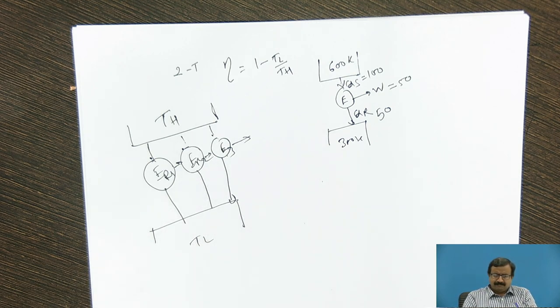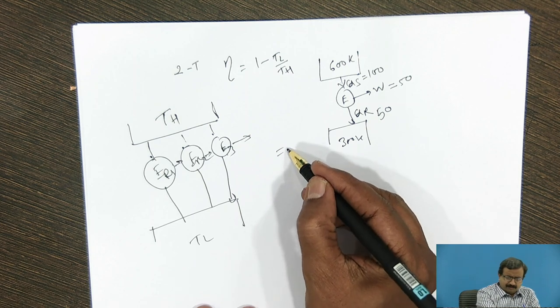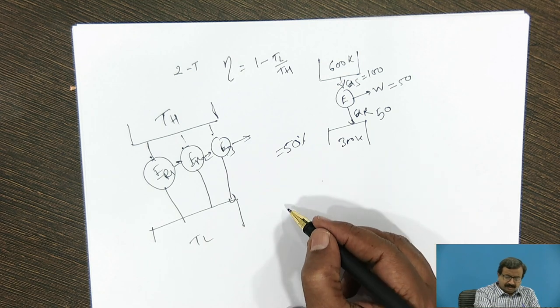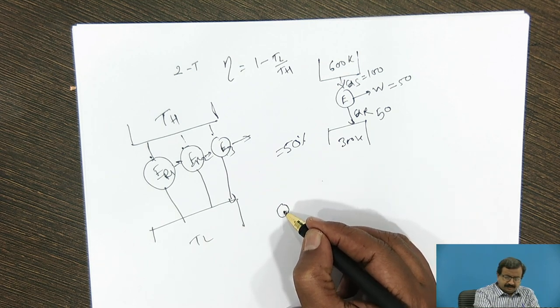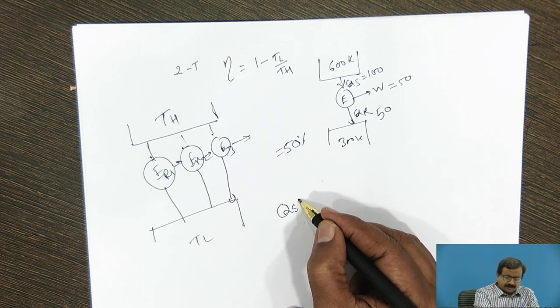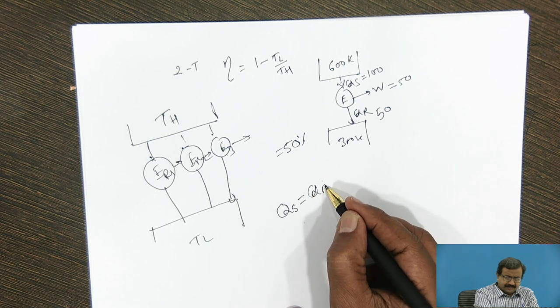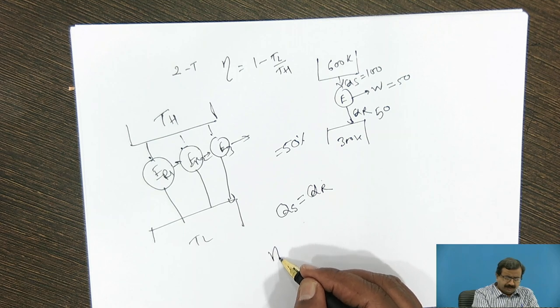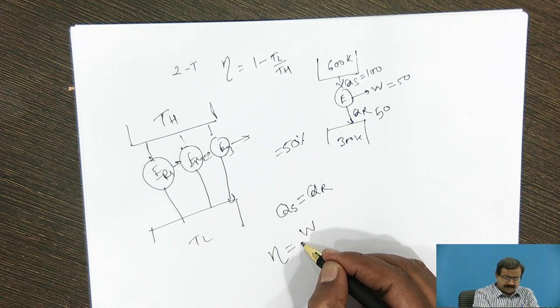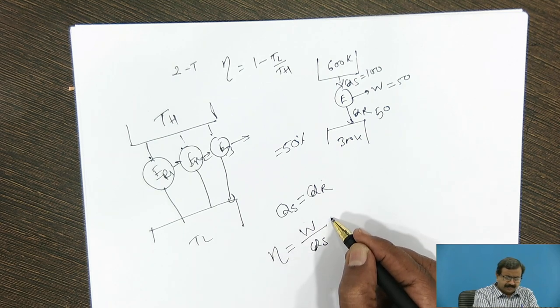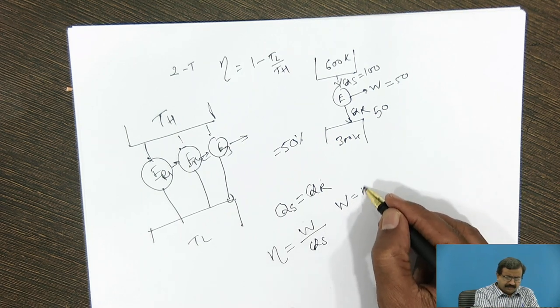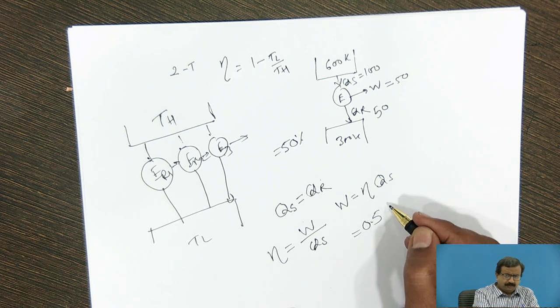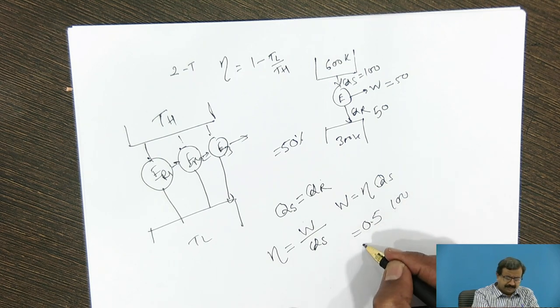But maximum efficiency that it can achieve is restricted by the formula 1 minus TL by TH. Now in this case, that particular efficiency comes out to be 50 percent. So heat supplied is equal to heat rejected in this situation. And we know that efficiency is equal to net work done upon heat supplied. So what is the work done? Finally, it is efficiency into heat supplied. So it is 0.5 into say 100, it comes out to be 50.